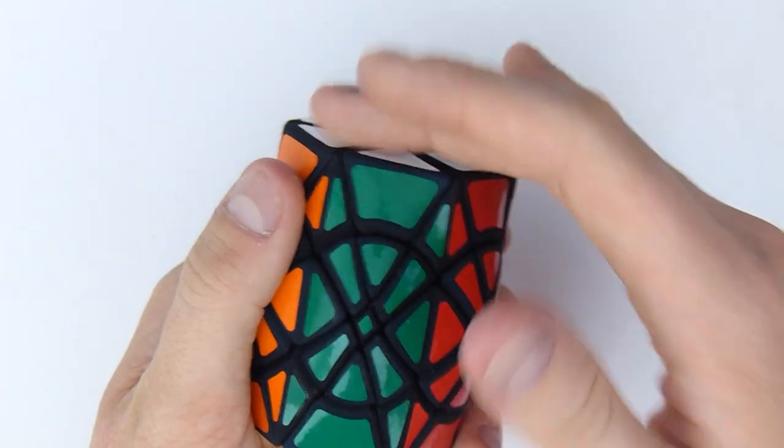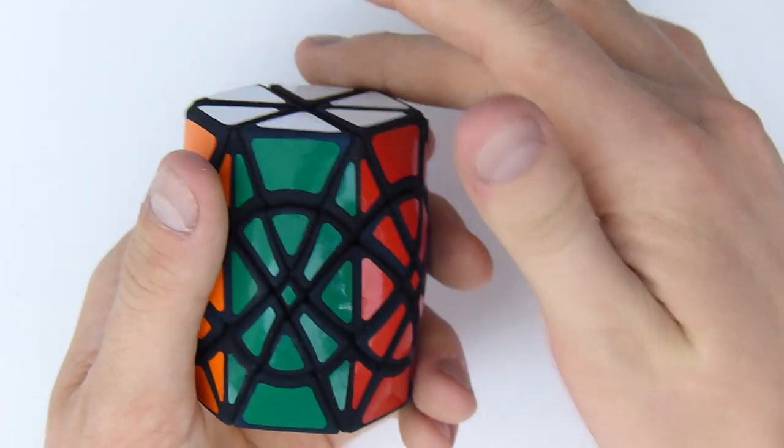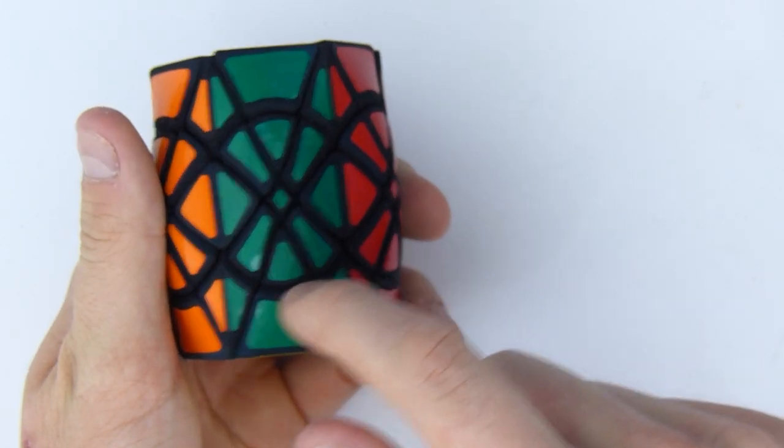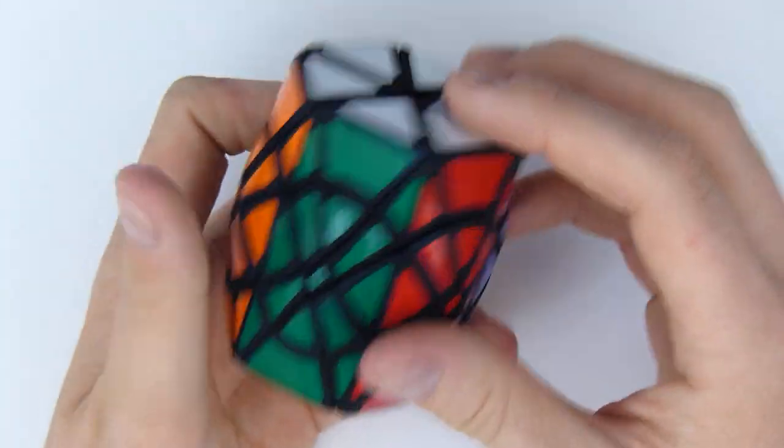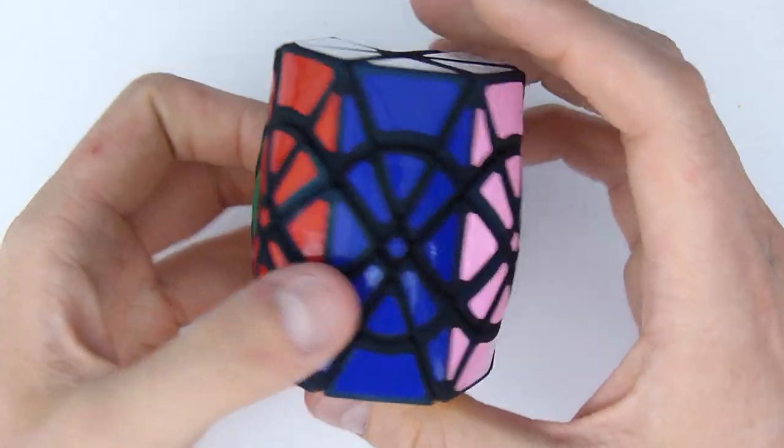And so I made a puzzle with flat faces, pillowed faces, curvy cuts, reverse curvy cuts, and flat cuts, and a shells mechanism. So this is the result, and I think it looks really beautiful.